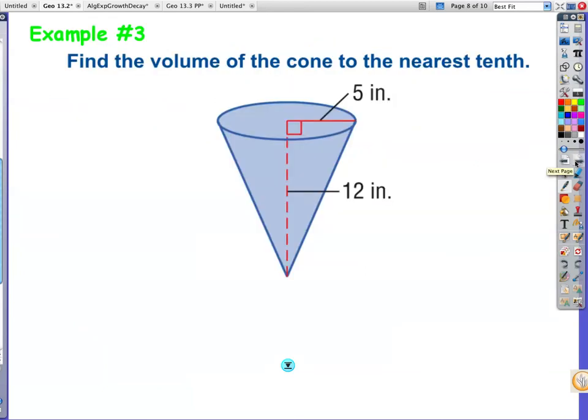Example number 3: find the volume of the cone. So the volume of your cone is one-third pi r squared as your base times the height. Remember it's still based off of this, the one-third base times height, it's just that your base of the cone is a circle. So I've got one-third pi radius squared times the height.